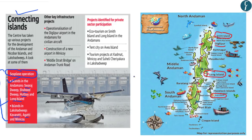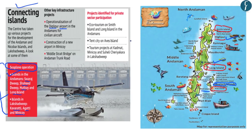Some Andaman islands were recently renamed. Havelock Island was renamed Swaraj Dweep, which will be part of sea plane operations. The second island is Shaheed Dweep, previously known as Neil Island. Further, there is a proposal for operationalization of an airport in Andaman for civilian aircraft at Diglipur. Ecotourism projects have also been identified in Andaman where the private sector will start participating, to be started at Smith Island and Long Island.